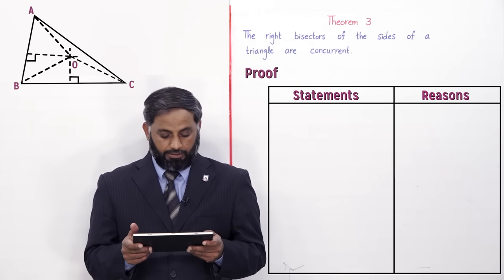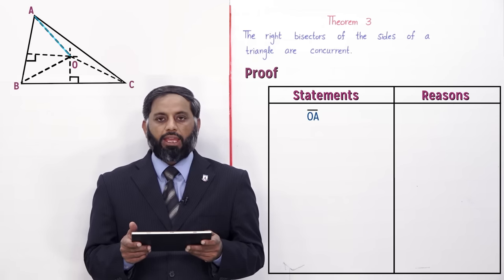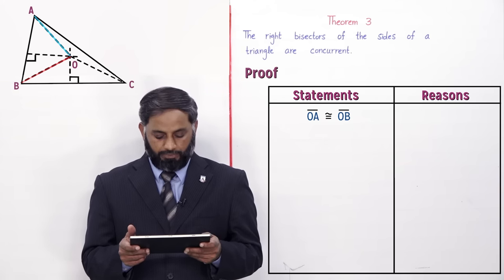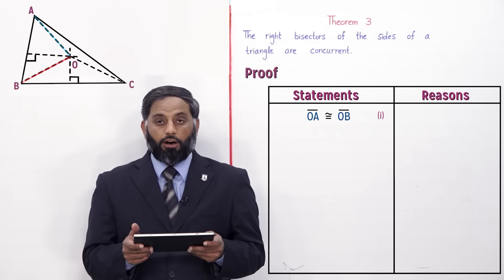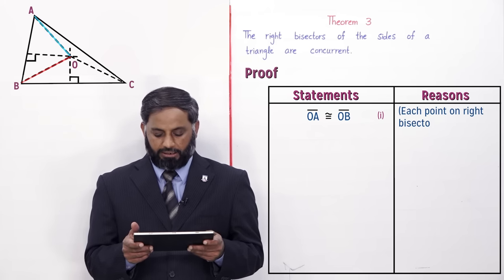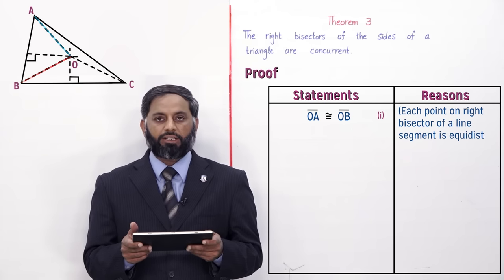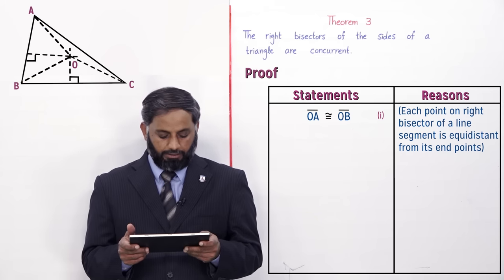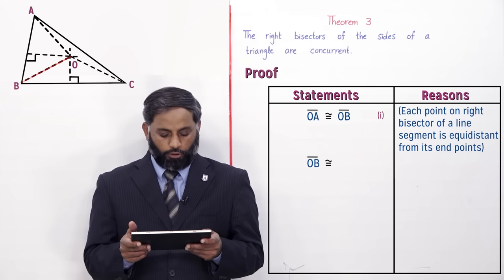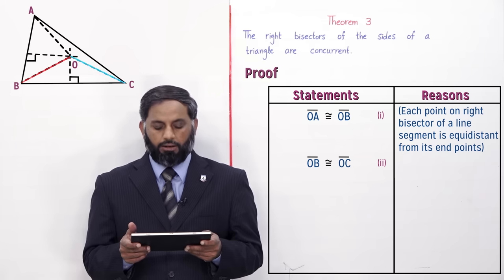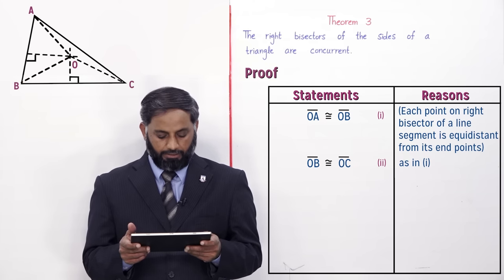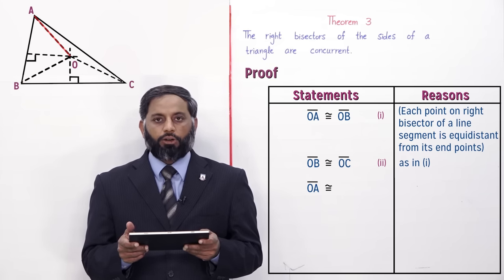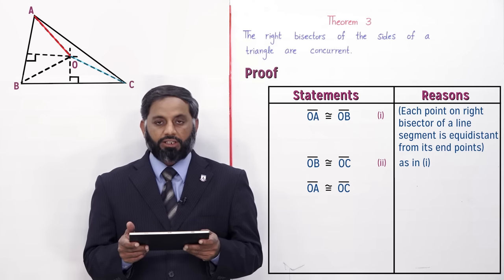Now let's prove this. Statement: OA is congruent to OB — equation 1, reason: each point on the right bisector of a line segment is equidistant from its end points. We proved this in Theorem 1. Similarly, OB is congruent to OC — equation 2, same reason. OA is congruent to OC — equation 3, reason: from equations 1 and 2.